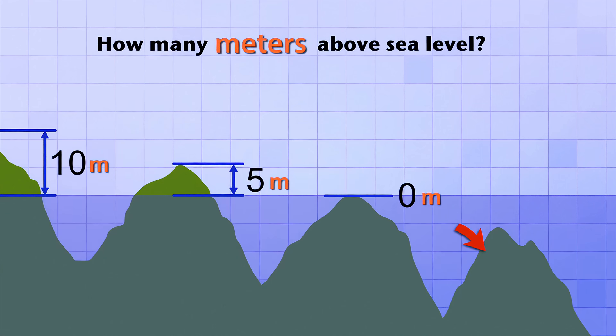But what about this island? It's not even above sea level at all. It's 5 meters below the surface. But our measurement is supposed to tell us how many meters above sea level it is. Fortunately, with negative numbers, that's no problem. We can just say that its height, compared to sea level, is negative 5 meters.